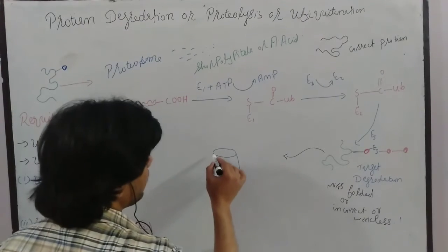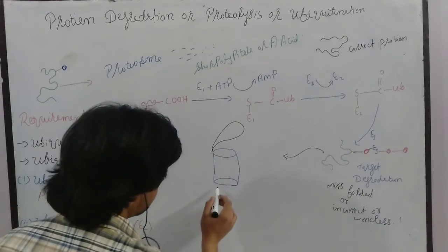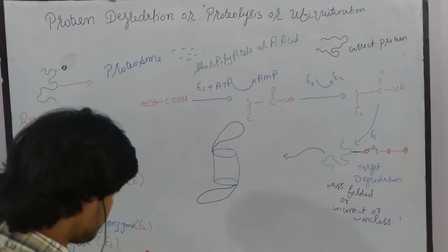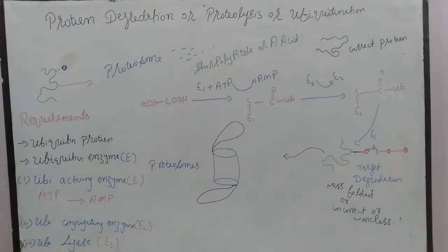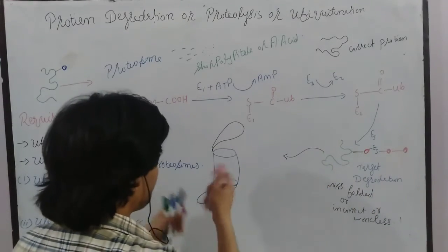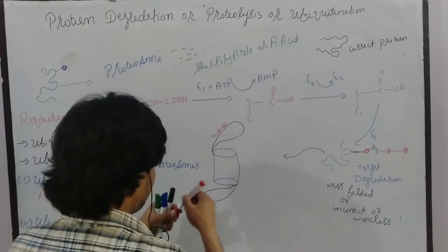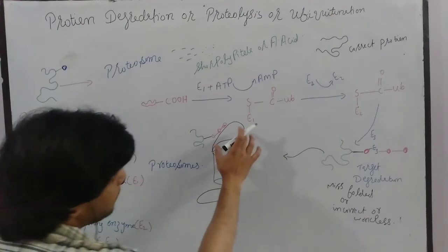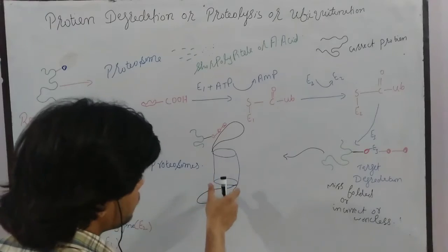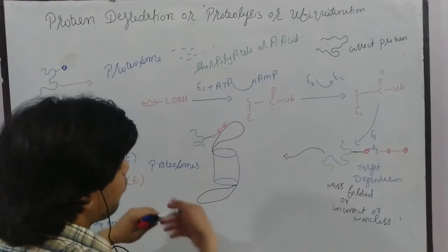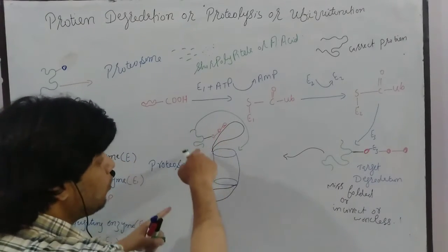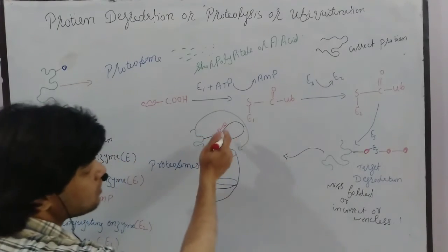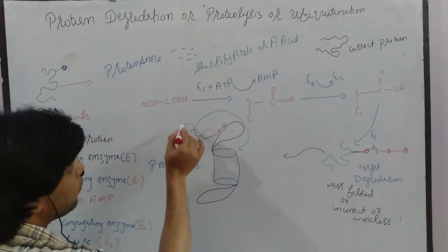The proteasome has a 19S cap structure. The ubiquitin proteins bind to this 19S cap, carrying the misfolded protein. Once they bind to the lid or cap of the proteasome, the lid opens. The misfolded protein is then internalized into the proteasome, and the ubiquitin dissociates from the misfolded protein.